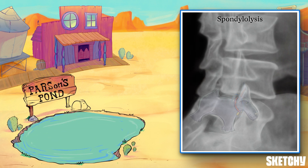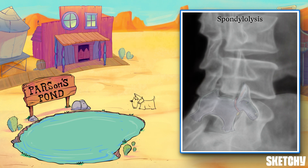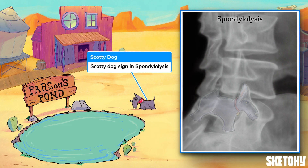To tie this all together, we have Parsons pond here — 'pars' for the pars interarticularis, and the 's' and 'p-o-n-d' for spondylolysis. And our Scotty dog is here to remind you of the pathognomonic finding on imaging.